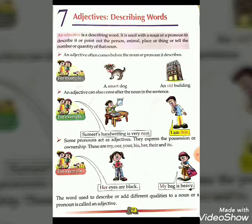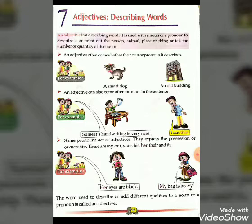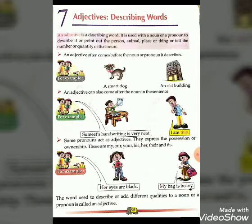Some pronouns act as adjectives — they express position or ownership. These are: my, our, your, his, her, their, and its. For example, 'Her eyes are black' — here the word 'her' acts as an adjective. Next example: 'My bag is heavy' — here the word 'my' acts as an adjective.